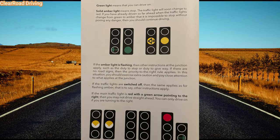Third, green light — the obvious one, which means you can drive on. Fourth, solid amber light. Solid amber is a transition period when the light changes from green to red. The instruction with a solid amber light is: stop if it is safe to stop. If you are close to the light and it is not safe to stop, then you should carry on driving past the traffic light.